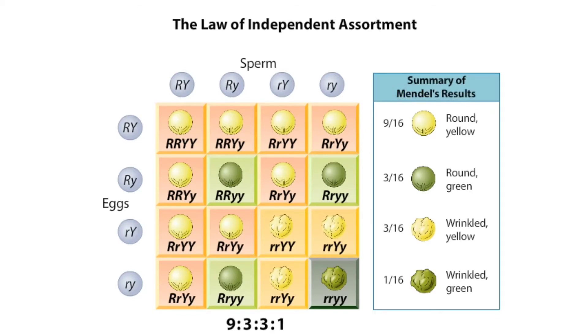What did Mendel actually see? From hundreds of F2 plants examined, he found a very similar ratio. From the data, he could conclude that the inheritance of seed shape is indeed independent of the inheritance of seed color.